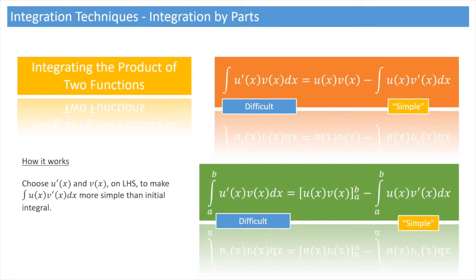Let's go ahead and work through a few examples to see how this is done. As a first example, let's see how to integrate the function 2x times cosine of x. We can clearly see that we're trying to integrate a product of two functions — we have 2x multiplying cosine of x — and we'll do this using integration by parts.